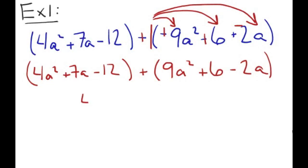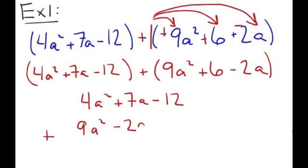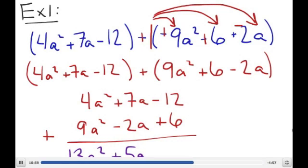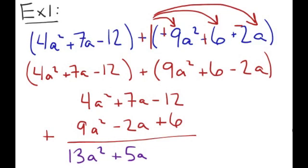So we have 4a squared plus 7a minus 12, and to that we're going to add 9a squared minus 2a plus 6. Again, all we're doing is combining like terms. So 4a squared plus 9a squared gives us 13a squared. 7a minus 2a gives us a positive 5a. And negative 12 plus 6 gives us a negative 6.